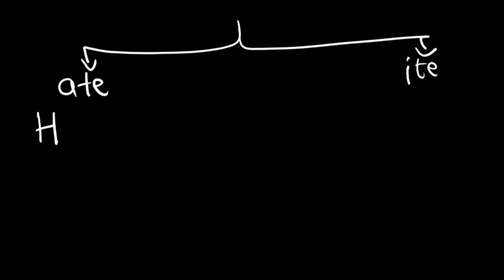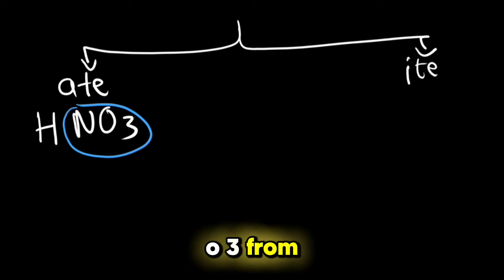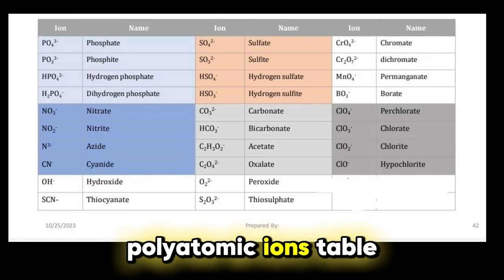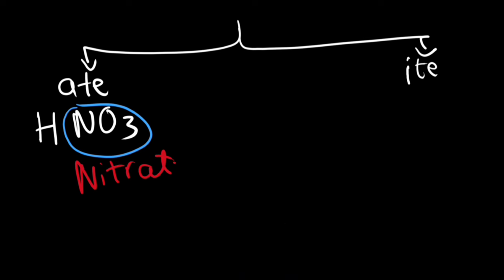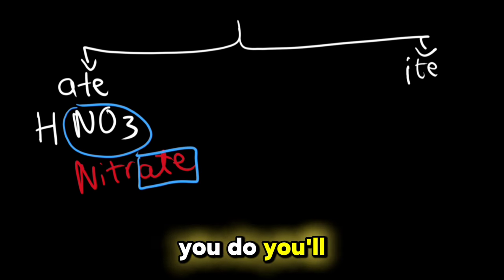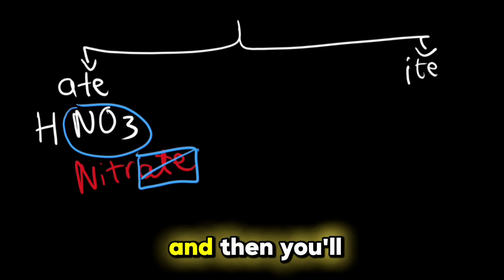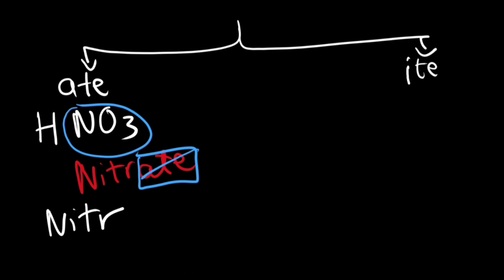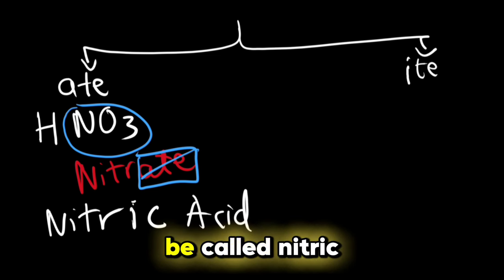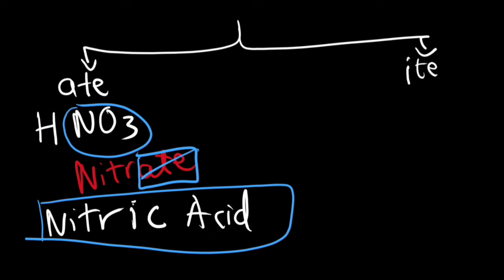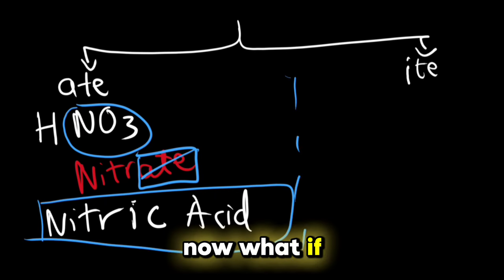Now this NO3, from the polyatomic ions table, is called nitrate. We can see here that it ends with ate. So what will you do? You will cancel out this ate and then you'll write ic instead of ate, and then you'll write acid. So this will be called nitric acid.